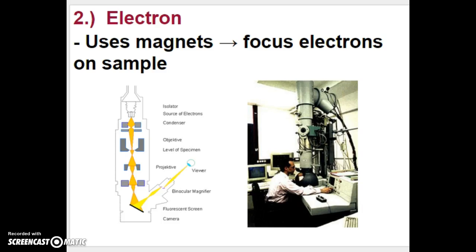The electron microscope is found in many research labs, colleges, universities, and hospitals. These use magnets instead of light to focus electrons on a sample, giving a much larger magnification as well as a very high-detail resolution picture.